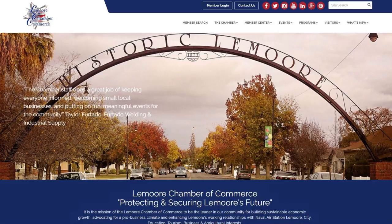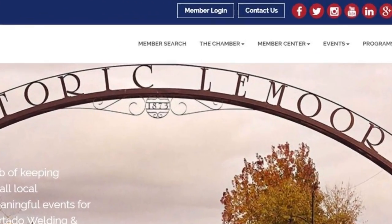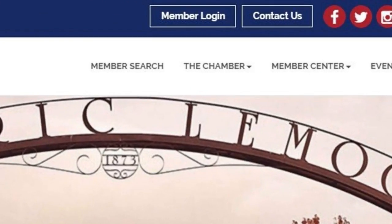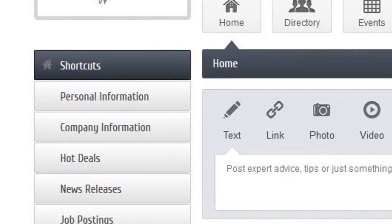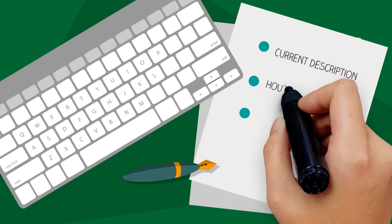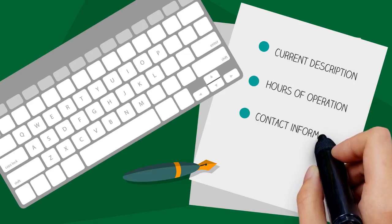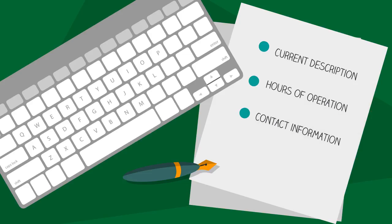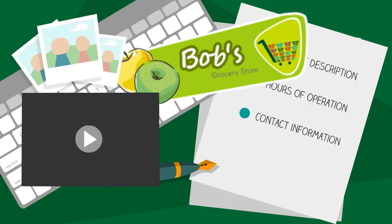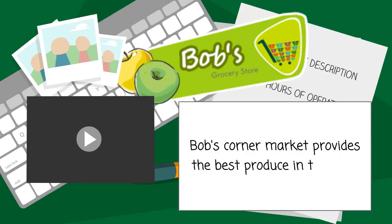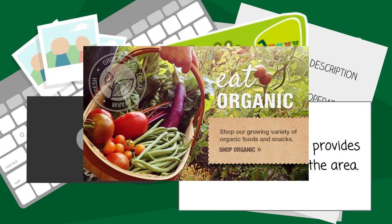Additionally, Bob can log in to the Member Information Center to manage his online business profile on the chamber's website. Here, he can update his directory listing with a current description, hours of operation, and contact information. He can make his listing stand out by adding his logo, additional photos, video, and an expanded description. To further promote his business, he may contact the chamber about posting an ad on targeted pages.